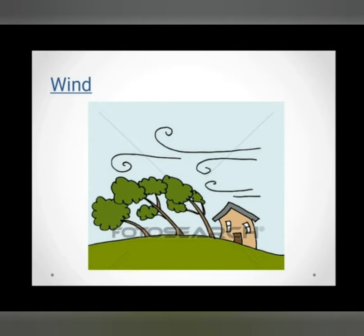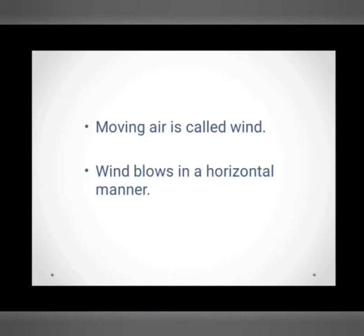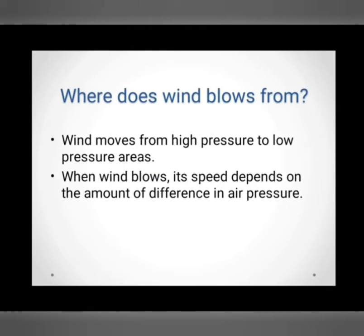We will understand the definition that moving air is called wind. Wind blows in a horizontal manner. Horizontal manner means in a slipping manner. The question is, where does wind blow from?